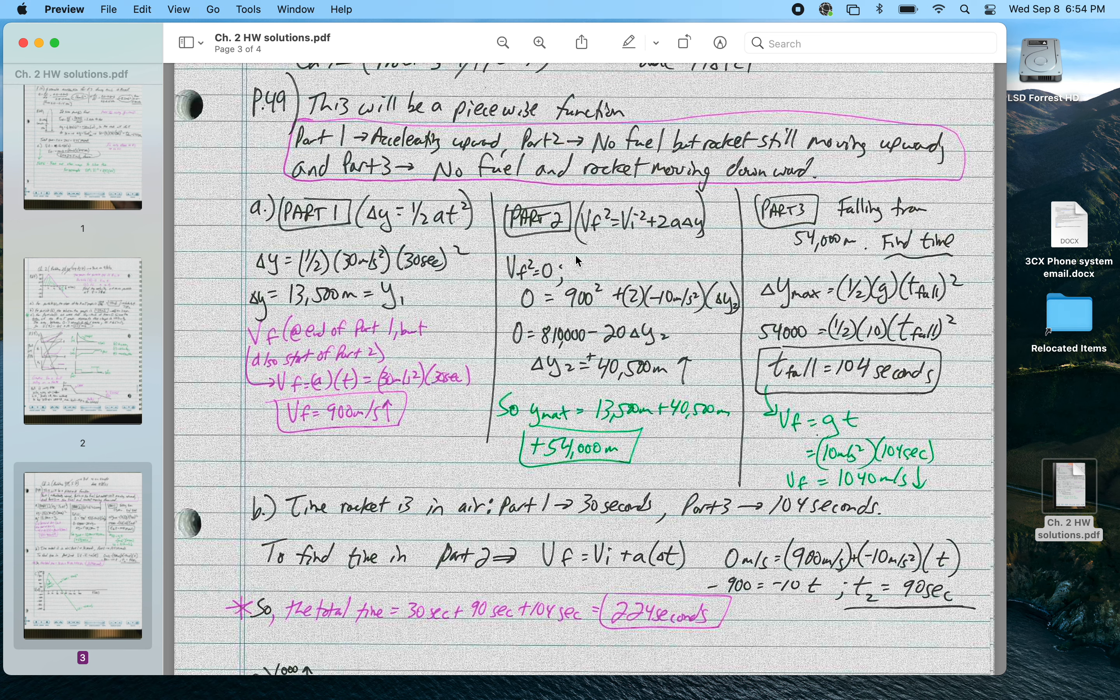It's moving upward because it was already moving at the end of stage 1. And part 3, where it's falling downward from its maximum height. So in order to find the maximum height, I really need to look at regions 1 and 2. So for region 1, I'm going to use this delta y is equal to one half at squared. And I get that the displacement during that first 30 seconds is 13,500 meters.